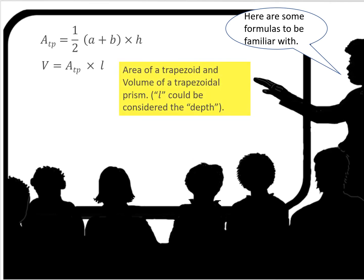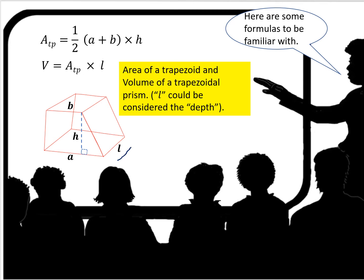Here are some formulas you might want to be familiar with. The area of a trapezoid is one-half times (A plus B) times H. The volume of a trapezoidal prism is the area of the trapezoid in the front times the length — that length could also be considered the depth. We find the area of the trapezoid and then multiply it by the depth or length to get the volume.